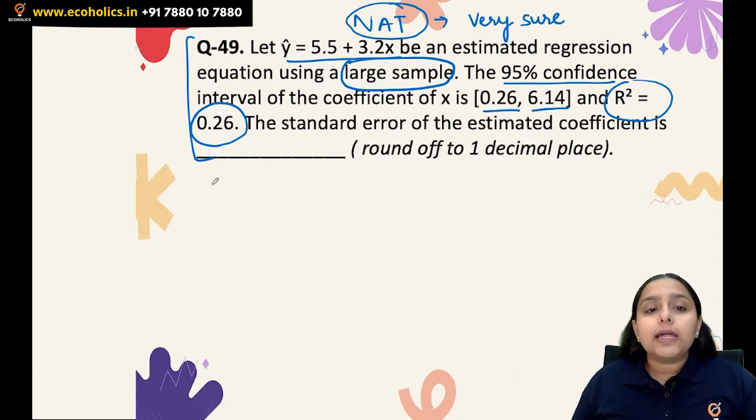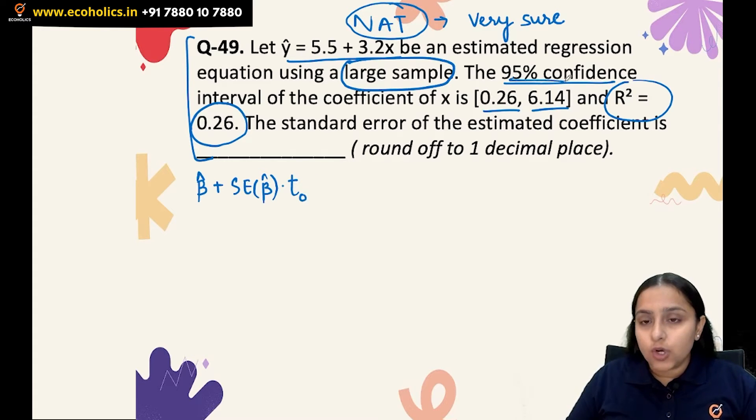What we know from conceptual knowledge is that the upper limit of the confidence interval is given by β̂ plus standard error of β̂ times the t-statistic. Because it's a 95% confidence interval, alpha will be 5%, whereas alpha by 2 will be 2.5%, so 0.025.